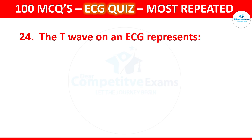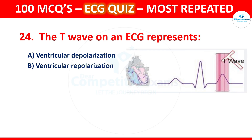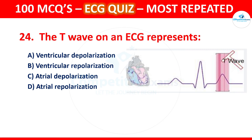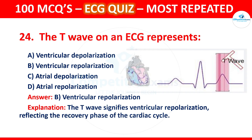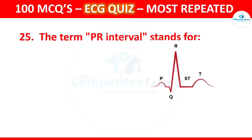Question 24: The T wave on an ECG represents which of the following? Options are ventricular depolarization, ventricular repolarization, atrial depolarization, or atrial repolarization. The correct answer is ventricular repolarization. The T wave signifies ventricular repolarization, reflecting the recovery phase of the cardiac cycle.